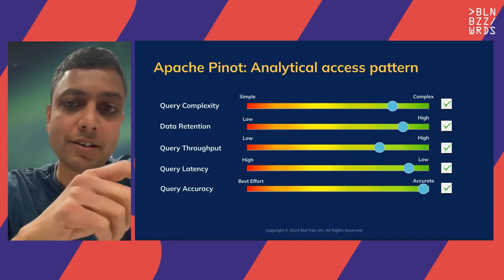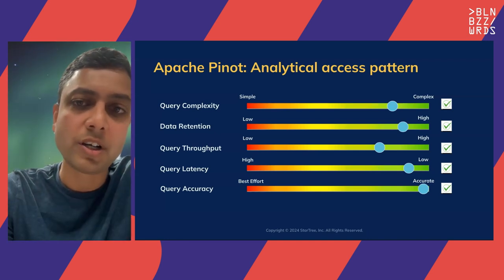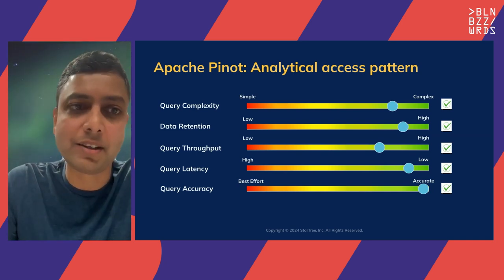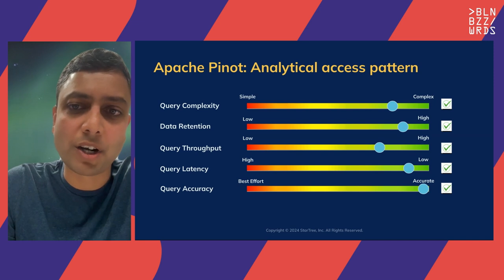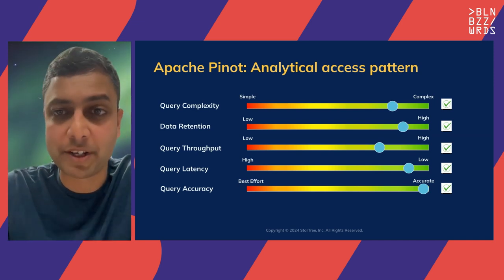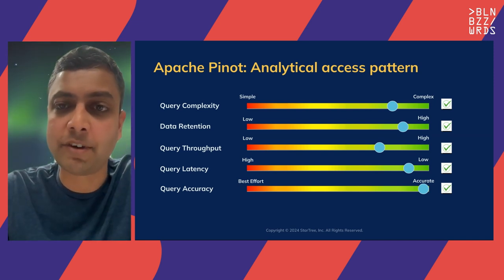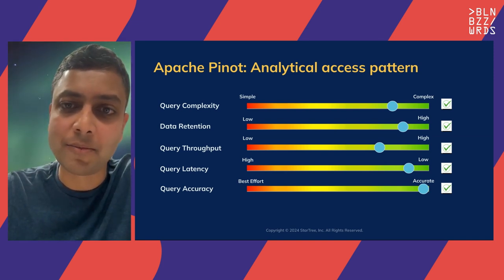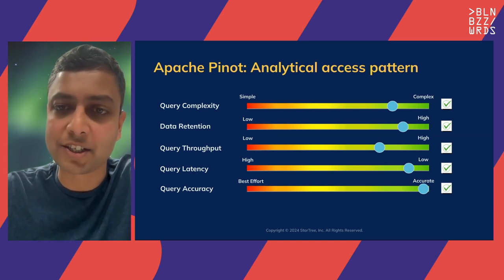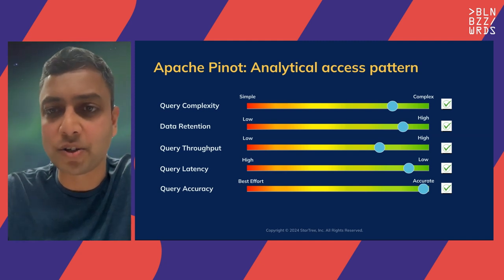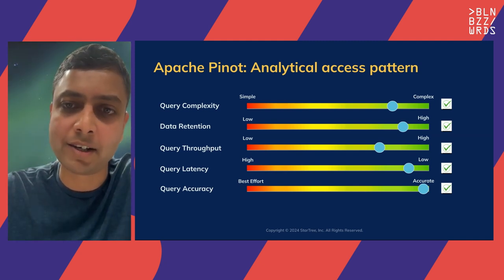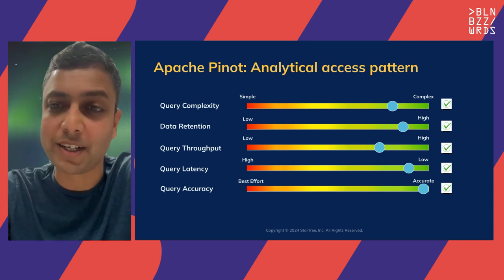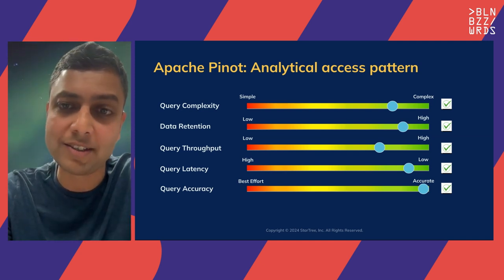Looking back at the requirements we saw before, Pinot is actually able to satisfy them — primarily data retention, throughput, and latency. It's a columnar database built for very large-scale data, terabytes or even petabytes. I'll talk about the secret sauce of Pinot in the next section — why it can also support tens of thousands of QPS for analytical queries in milliseconds.